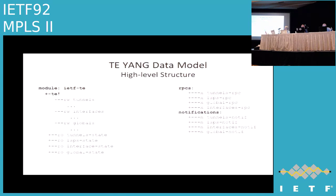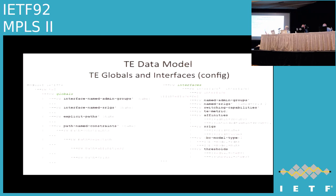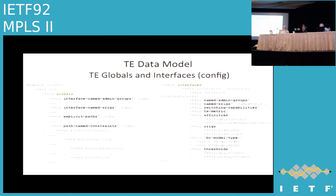The TE base Yang module has a TE container holding tunnel interfaces and global configuration, as well as tunnel state, RSV state, interface state, global state, actions, and notifications. Under globals we have admin groups, named admin groups, named SLGs, named explicit paths, and named constraints — groupings given a name that can be reused and applied wherever needed. Under interfaces, there is a placeholder to reference a named admin group or named SLG and the specific attributes of that interface.